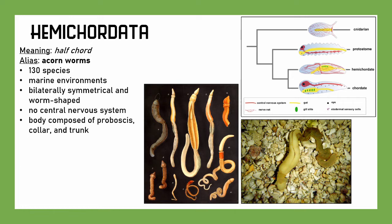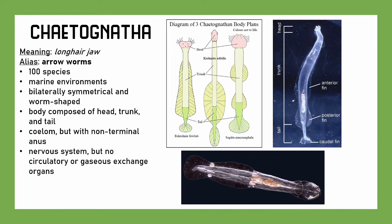We have Chaetognatha, which means 'long-haired jaw.' They're also known as arrow worms, because they look like worms shaped like arrows. They are found in marine environments, bilaterally symmetrical, and worm-shaped, with a head, trunk, and tail. They have a coelom, so they're coelomates, but with a non-terminal anus. They have a nervous system but no circulatory or gas exchange systems. They're usually fairly translucent, so you can see through them.